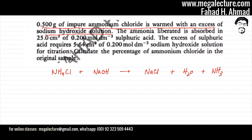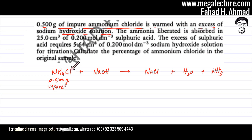Two pieces of information are provided. One is that it is 0.500 grams — this mass is accurate up to three significant figures — but it's impure. So that means we don't actually have the mass of NH4Cl; we have the mass of the impure substance. The other piece of information is that NaOH is in excess, so we don't have the moles of NaOH either.